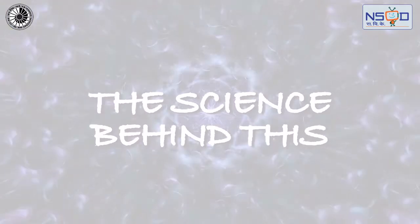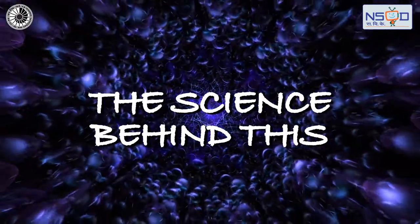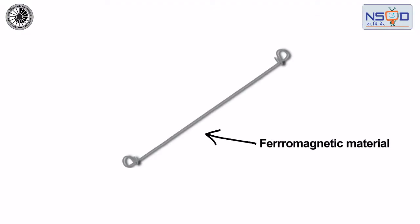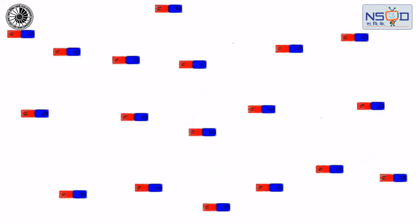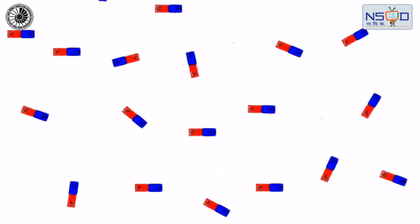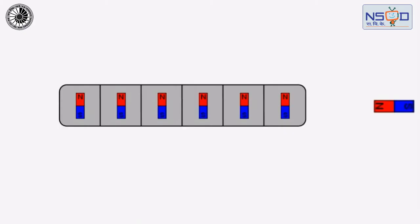In a ferromagnetic material, elementary dipoles are aligned in so-called domains, and the domains through their arrangement bring about the internal magnetic field of the material magnetization.